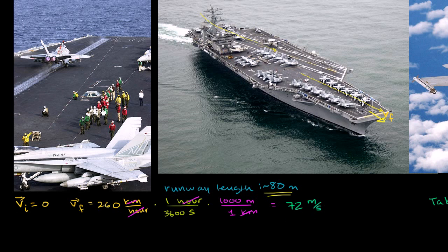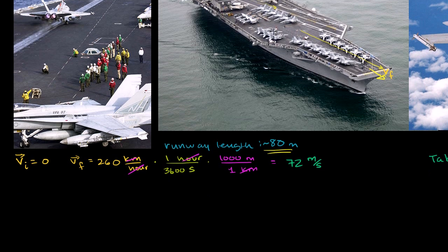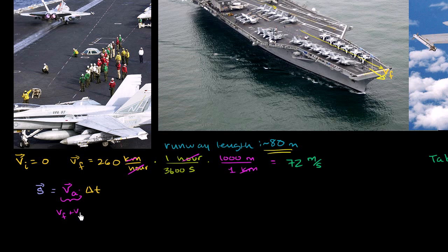Now let's figure out what the acceleration must be given the runway length. We'll assume constant acceleration to simplify things. The total displacement equals the average velocity while accelerating times the change in time. With constant acceleration, average velocity is just (final velocity + initial velocity) / 2.